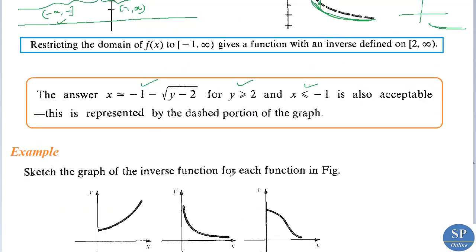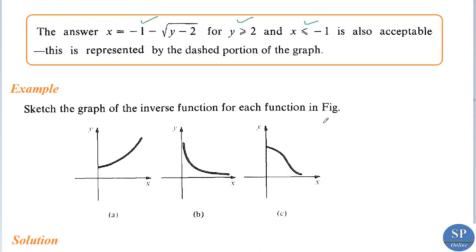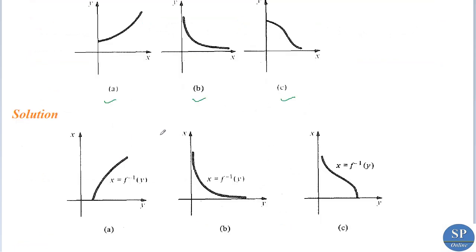Next, we sketch the graph of the inverse function for each of the given figures. For the first curve, flipping it with respect to the line y equal to x gives the graph of the inverse function. For the second, interchanging the x-axis and y-axis similarly gives its inverse graph. For the third, flipping with respect to y equal to x gives its inverse graph.